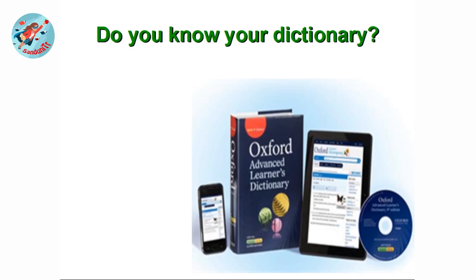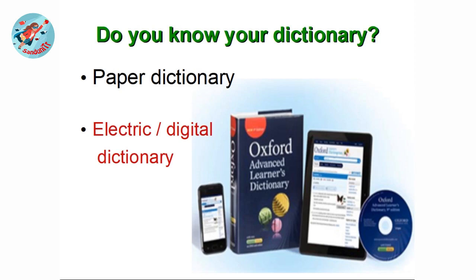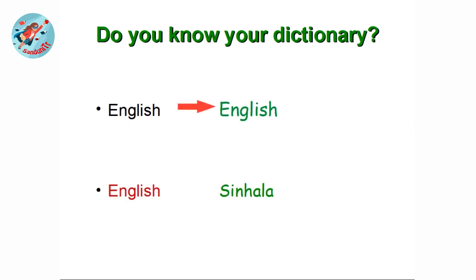Do you know your dictionary? In this picture there are two types of dictionaries. One is a paper dictionary. The other one is an electric or a digital dictionary. We can also use digital dictionaries with laptops, tablets, and smartphones. And we can divide dictionaries into English-to-English dictionaries and English-to-Sinhala dictionaries.